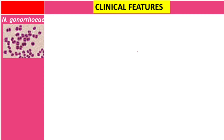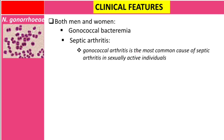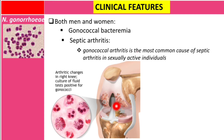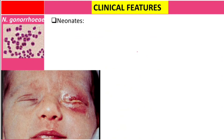In both men and women there is gonococcal bacteremia. Patients may develop septic arthritis, and gonococcal arthritis is the most common cause of septic arthritis in sexually active individuals. If you take synovial fluid from the joint and examine it, you will see the bacteria inside neutrophils or other white blood cells. You can see inflammation of the joints in the patient image.